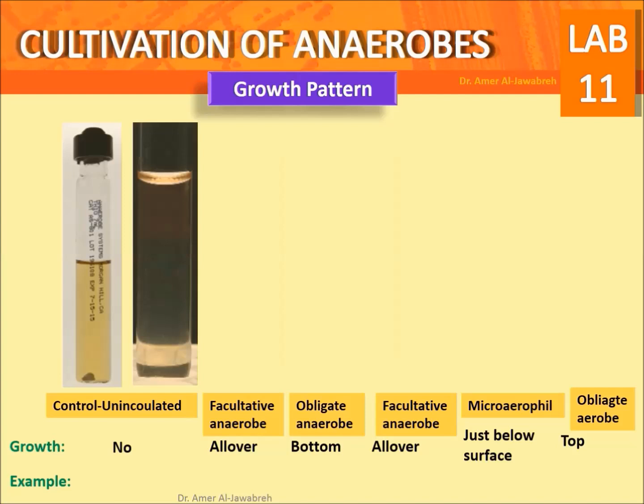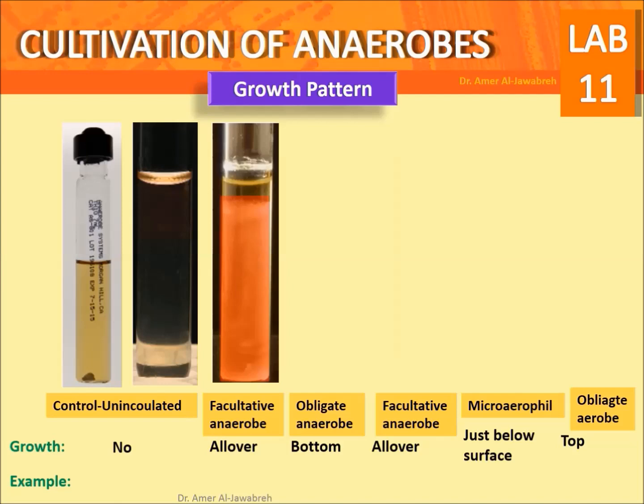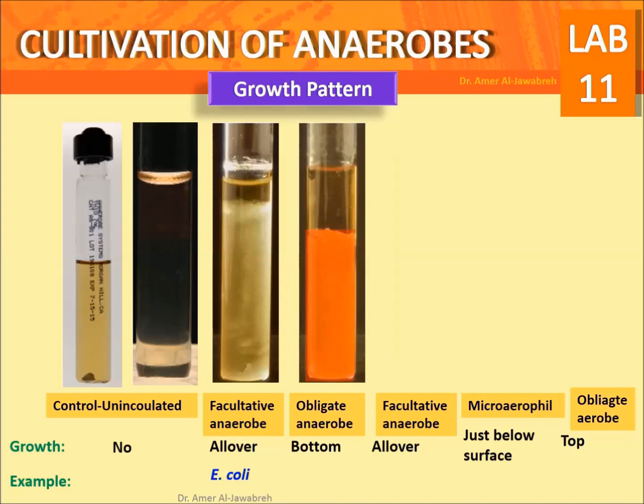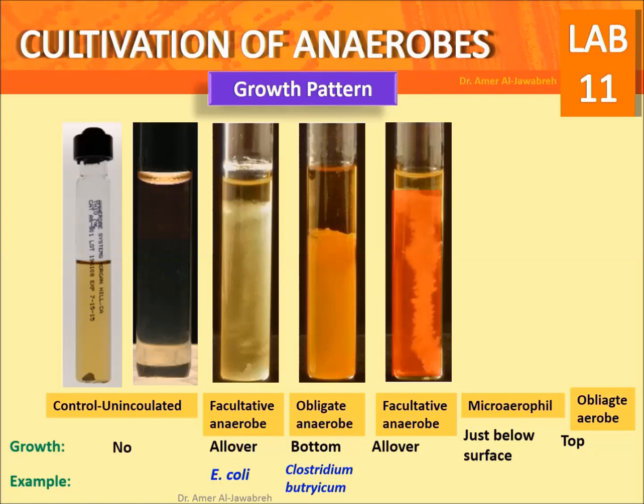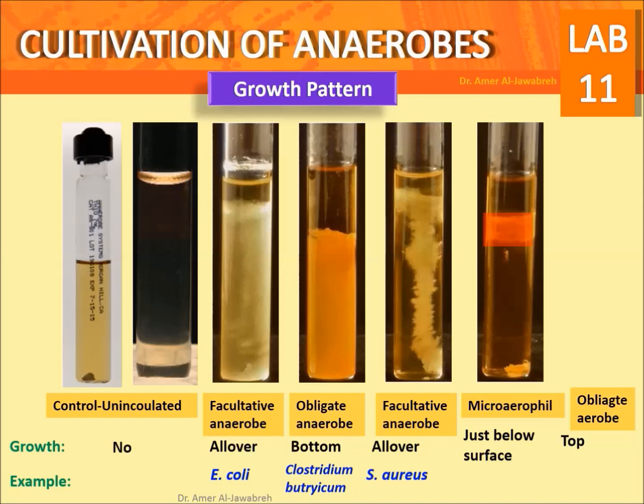Growth pattern results: control (un-inoculated) — no growth. Facultative anaerobes — growth all over the tube (example: E. coli, S. aureus). Obligate anaerobes — growth at the bottom only (example: Clostridium butyricum). Microaerophiles — growth just below the surface (example: Listeria). Obligate aerobes — growth at the top only (example: Pseudomonas aeruginosa). Use this form to report results.